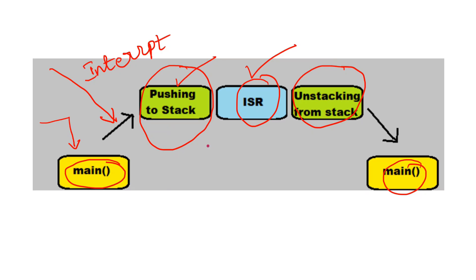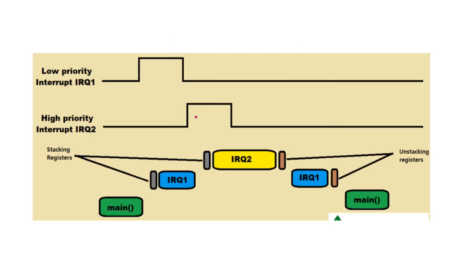But what happens in real time — there is no single interrupt; there are multiple interrupts. Whenever multiple interrupts occur, how should our processor execute those interrupts?